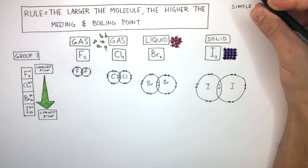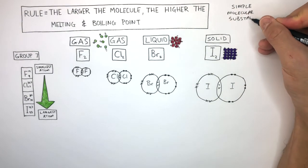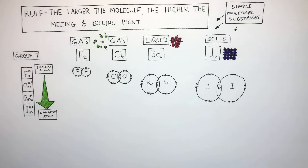These are examples of simple molecular substances. The majority of simple molecular substances are gases or liquids at room temperature. Some are solids, such as iodine, as we already know, sulfur, phosphorus, and there are others which you can research.